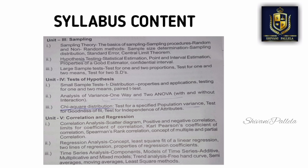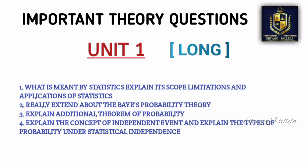Unit 2 covers binomial, normal, and Poisson probability distributions. Unit 3 is Sampling — you will have sampling concepts and hypothesis testing, with both theory and problematic questions available. Unit 4 is Hypothesis Testing — one-way and two-way ANOVA. Unit 5 is Correlation and Regression.